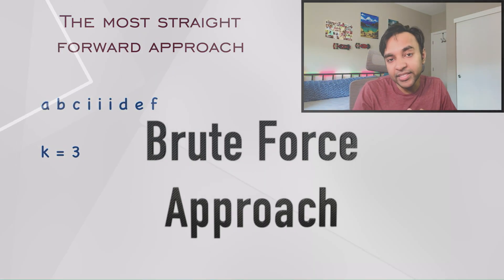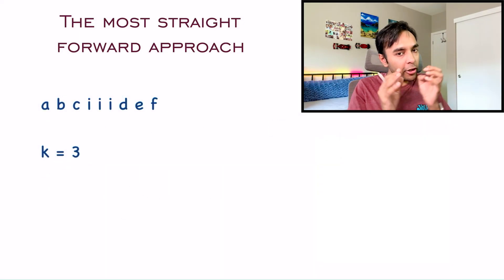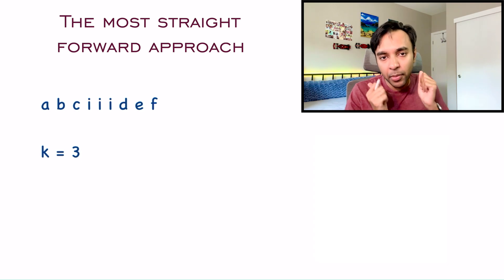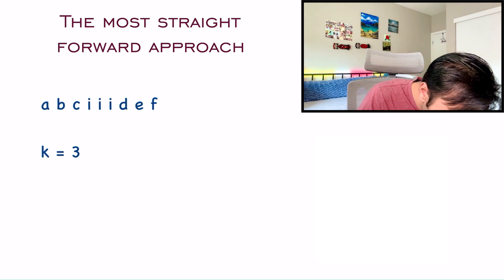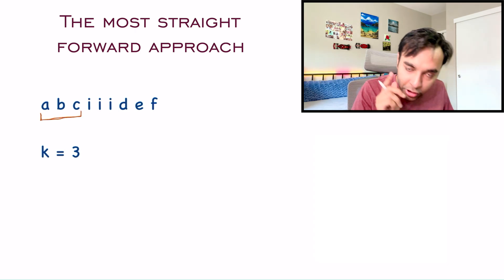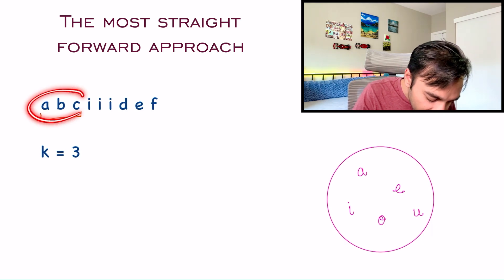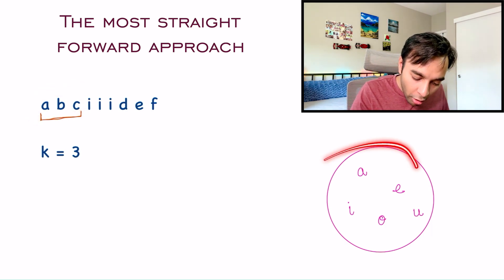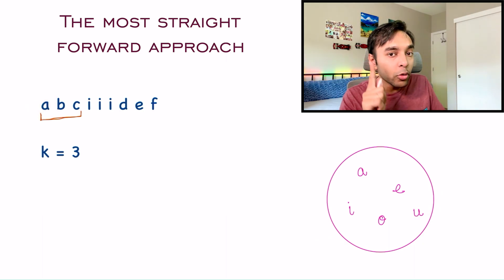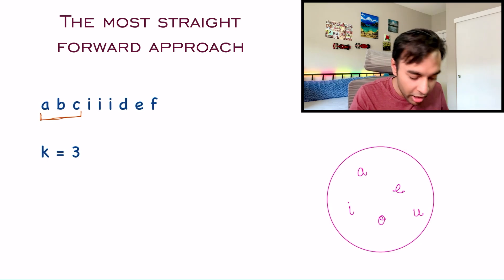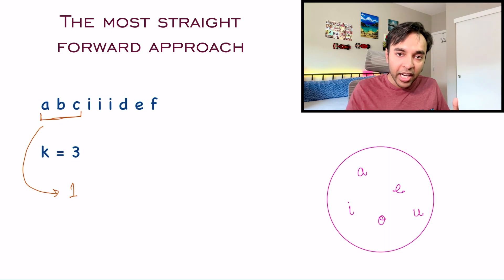Let's say you have the sample test case and the value of k is 3. The most obvious brute force solution would be to start finding all the substrings. The first substring is ABC — and out of this string, how many are vowels? Only A is a vowel. So in the first substring, you could find a maximum of one vowel. You just record that you found one vowel in this.